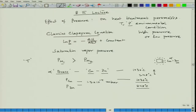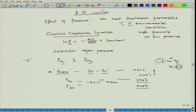Zinc will try to enter the vapor phase to maintain its equilibrium saturation vapor pressure. Since the saturation vapor pressure of zinc is much higher than copper, zinc will evaporate. If this is a 70-30 brass, the 30 percent zinc on the surface would be depleted, and the zinc content would go down — effectively changing the properties of the alloy.